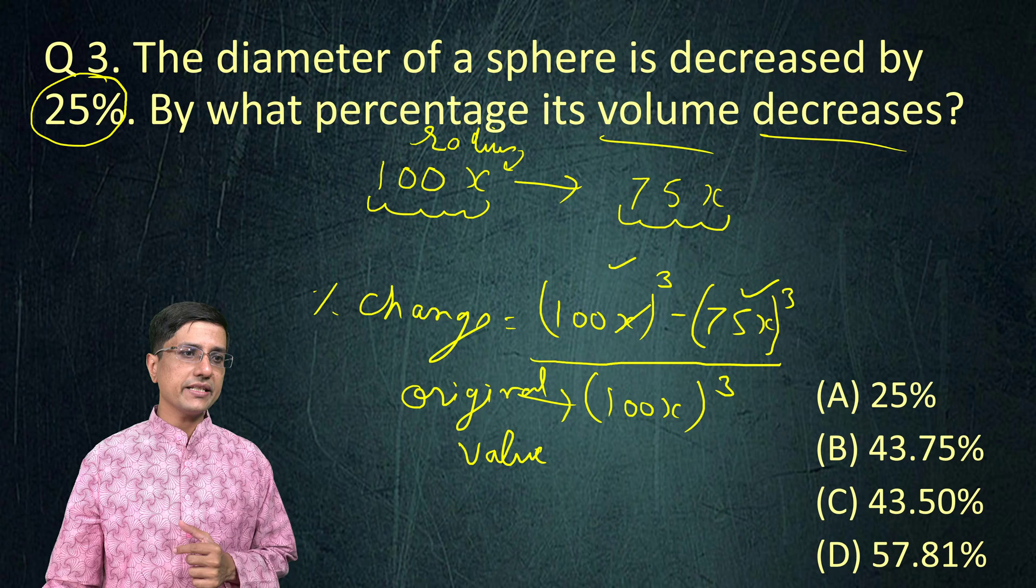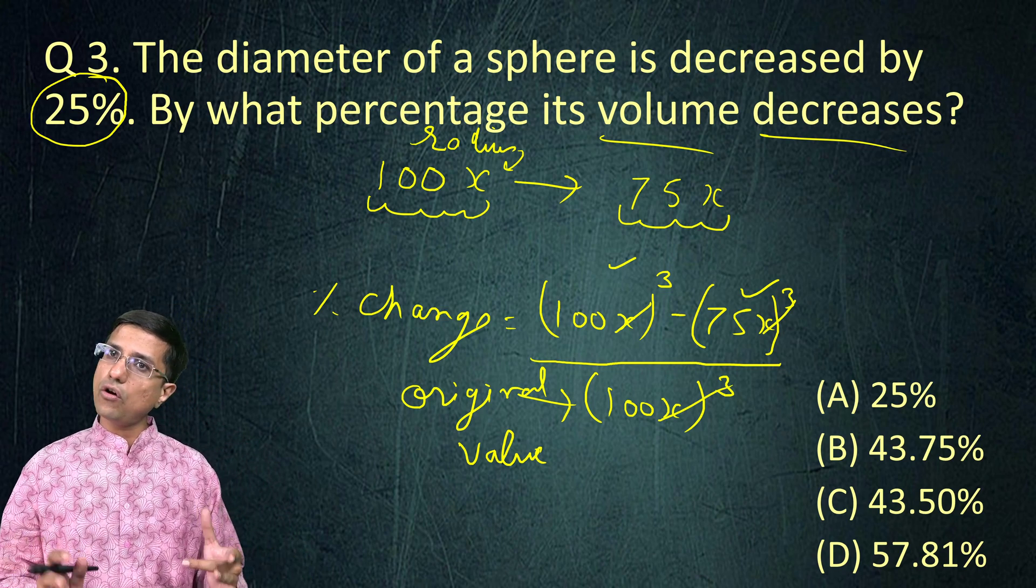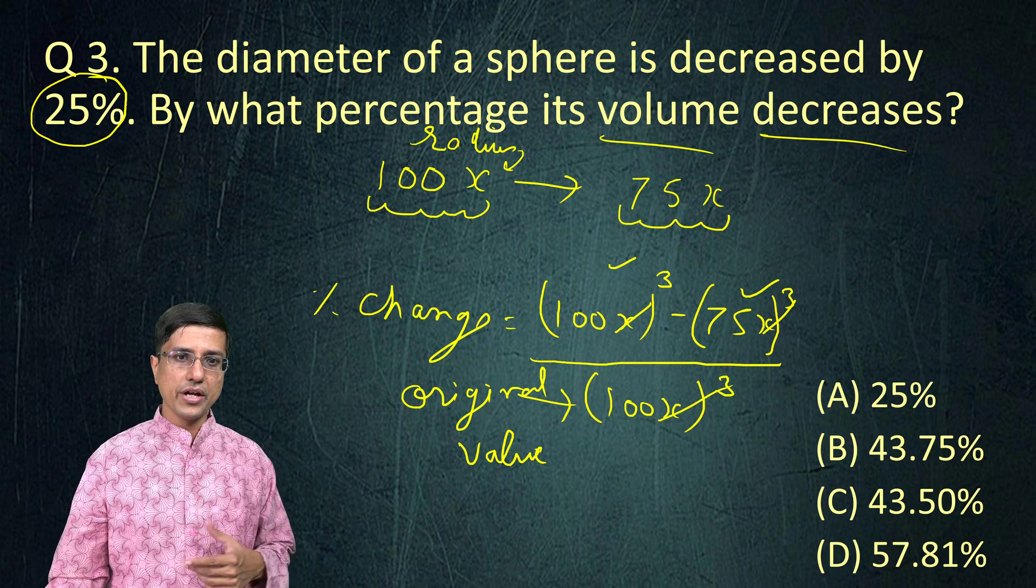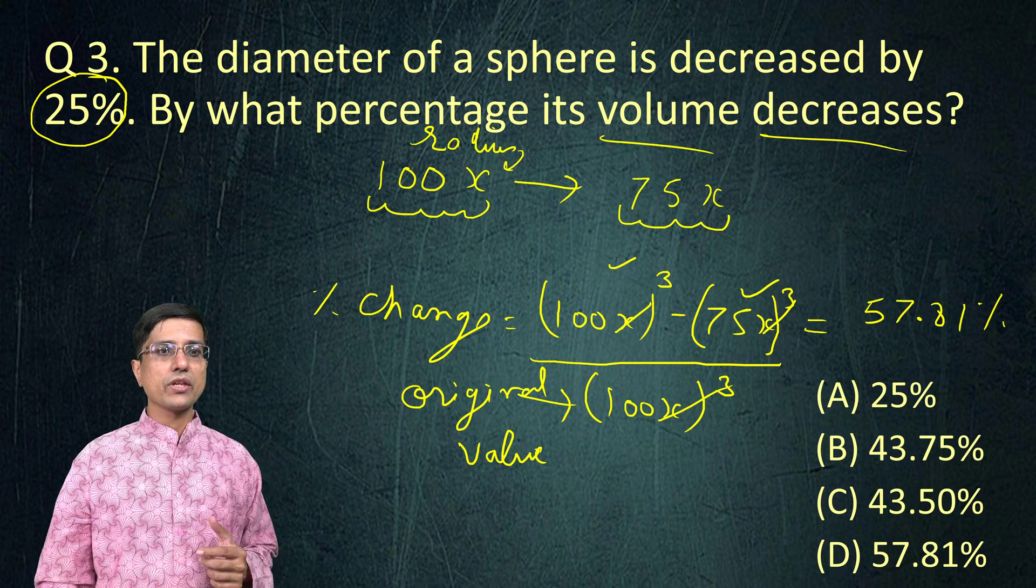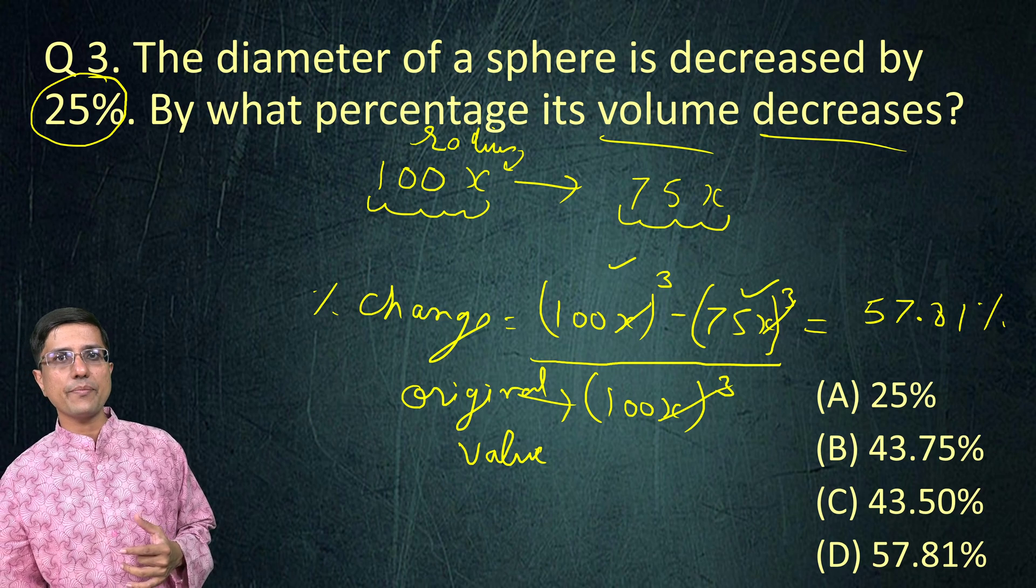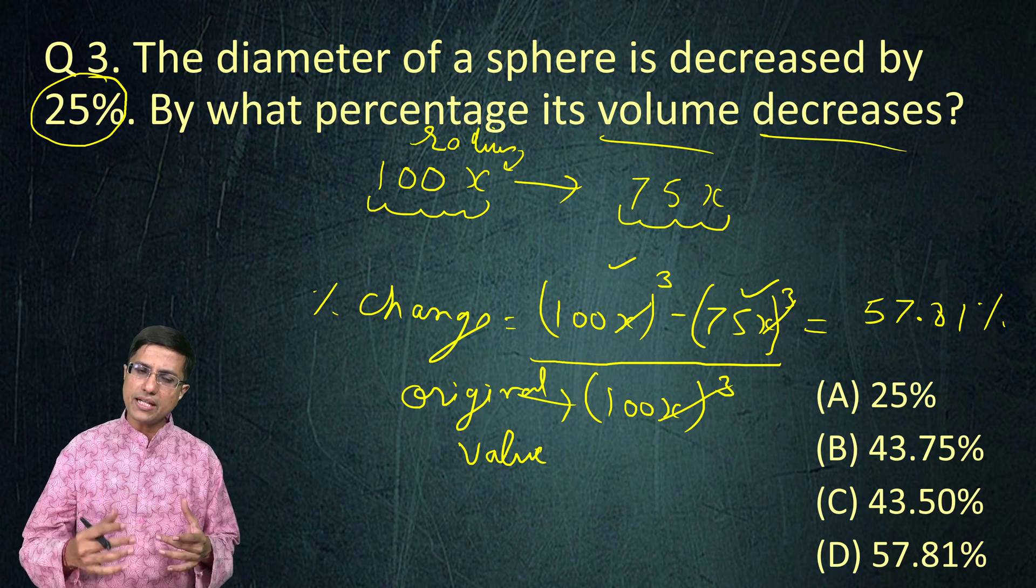One thing to notice here is that this is x³. So this common factor of x³ would be there in all terms and it gets cancelled out. If you were to compute this, this would come out to be 57.81. It's 8125, but we'll just approximate it to be 81. So again, like I said, it's non-trivial. The math is non-trivial.